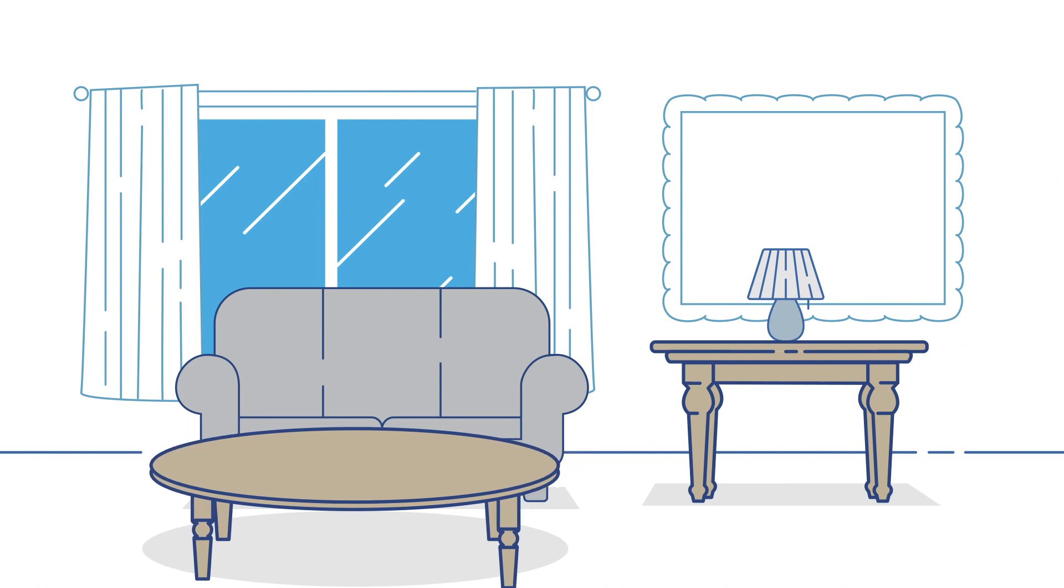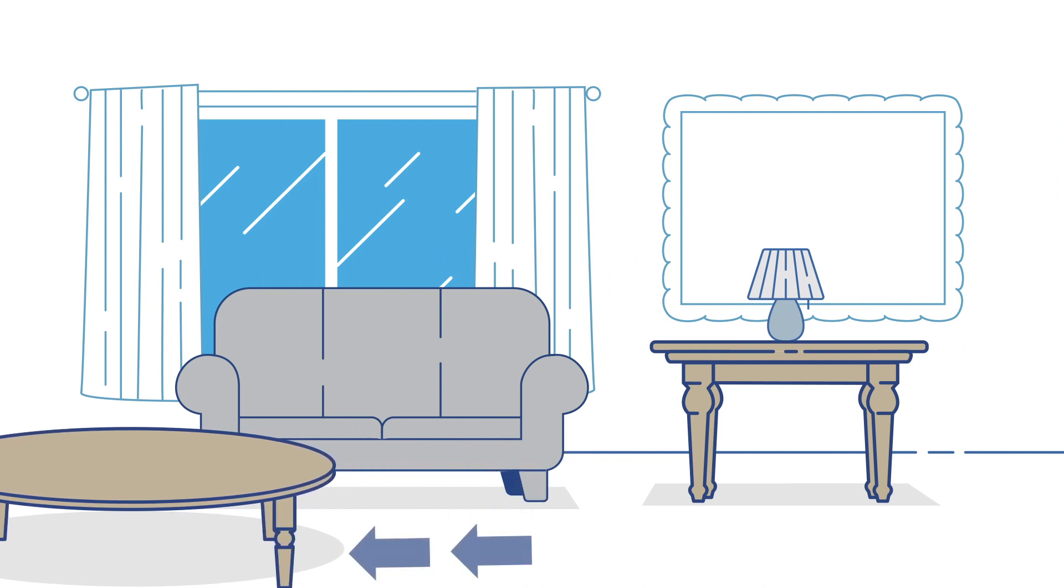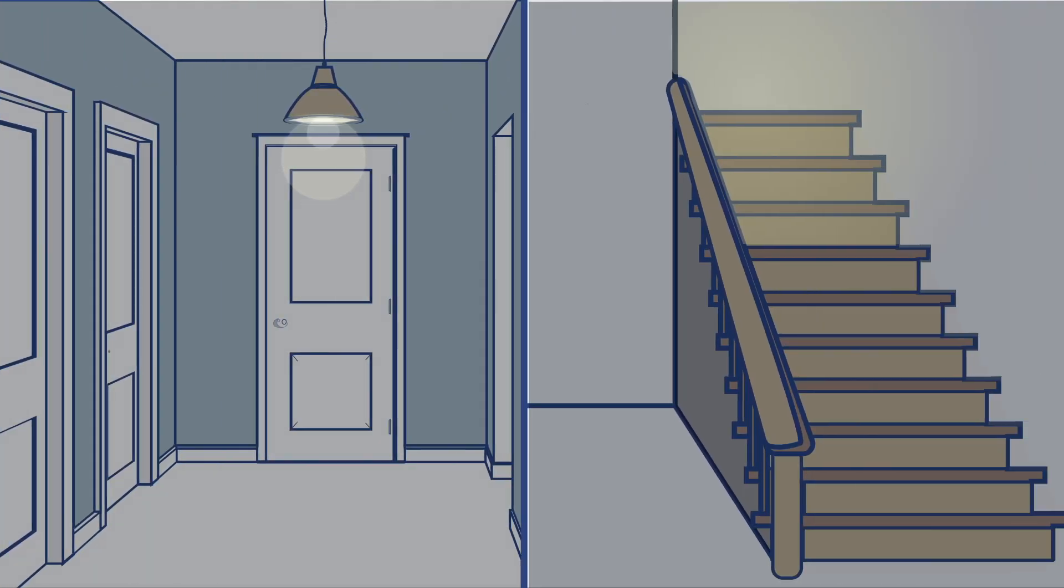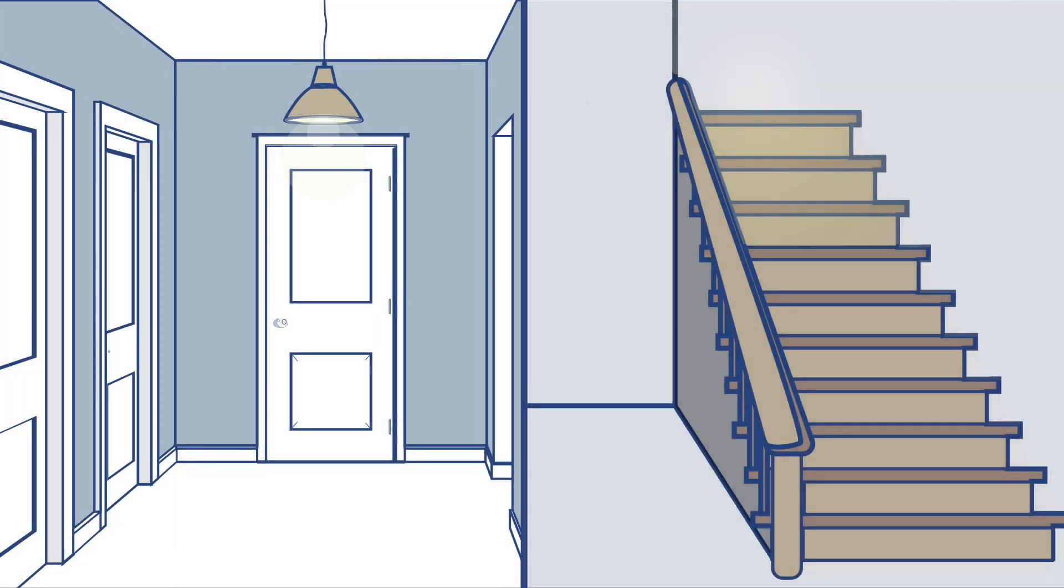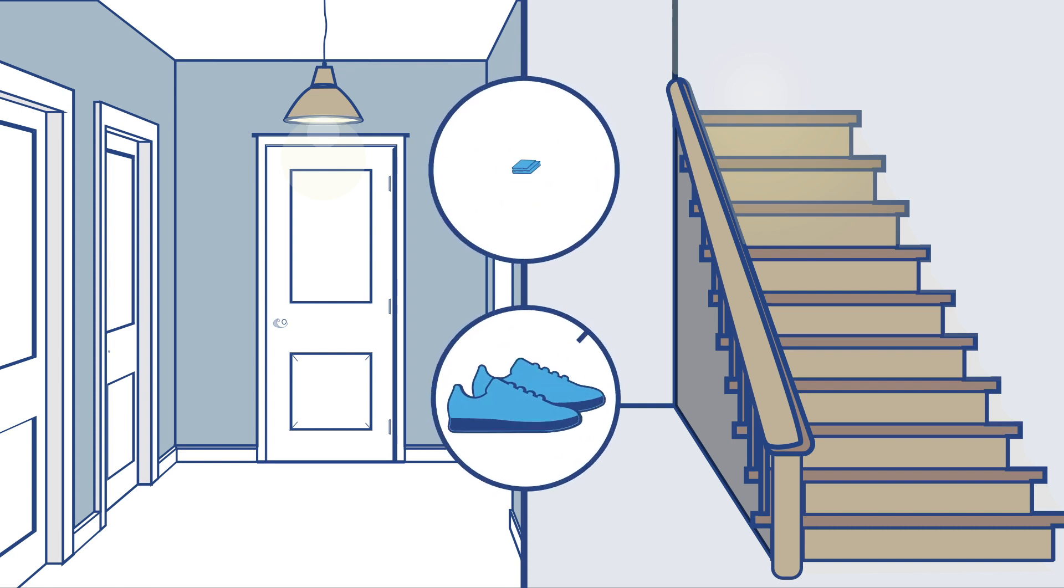First, make sure your home environment is safe. Moving furniture so that you have a clear path to move in is important. Make sure paths in the hallways and stairs are well lit and free of objects like shoes and books.